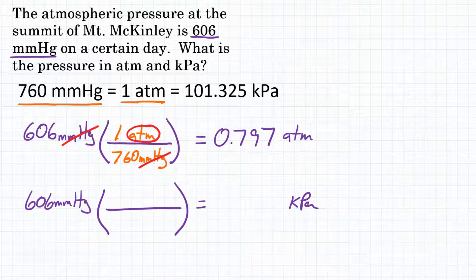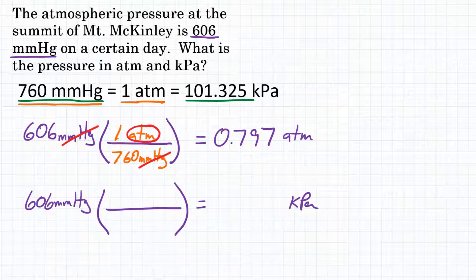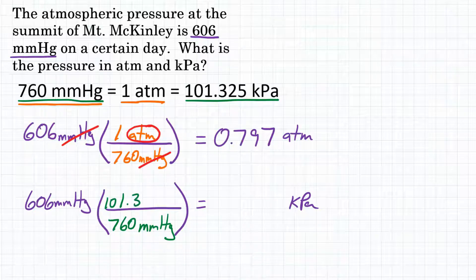Now on to the second problem. So here we are going from millimeters of mercury to kPa. So I need the relationship that 760 mmHg is equal to 101.325 kPa. So again, for our conversion factor, 760 mmHg will be on the bottom and 101.325 kPa will be on top.